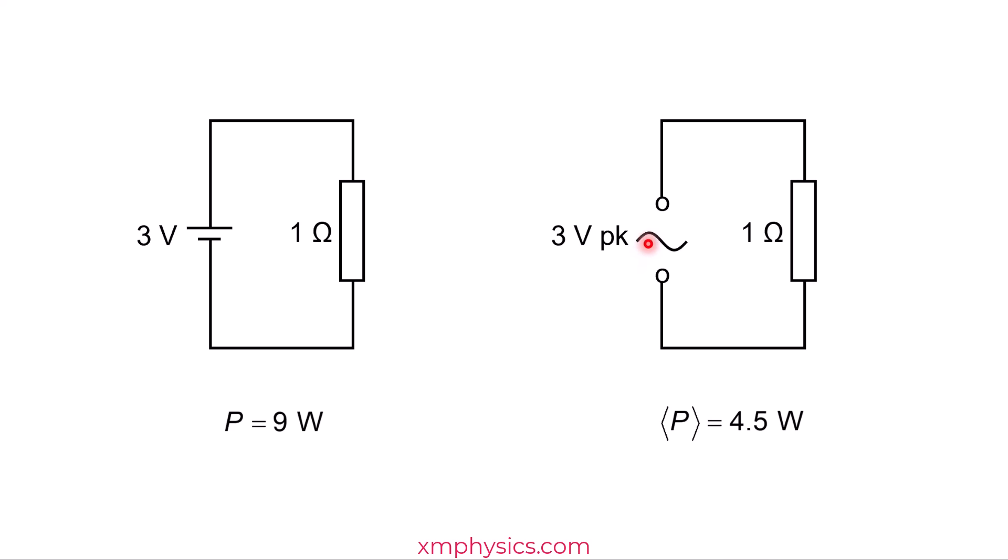For this reason, we often prefer to specify AC power supplies using their root mean square voltages instead. So the RMS value for a 3 volts peak is of course 2.12 volts. So instead of specifying a peak voltage of 3 volts, we will rather specify the RMS voltage of 2.12 volts.